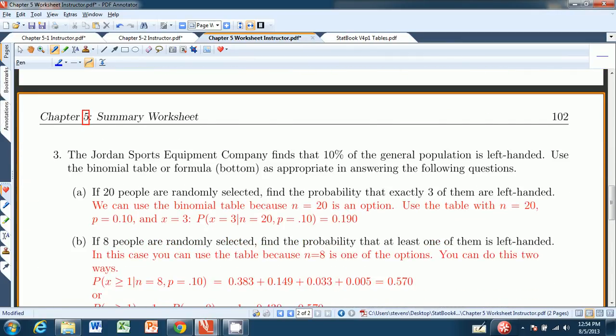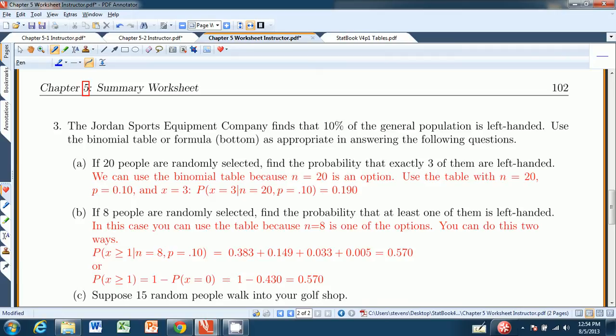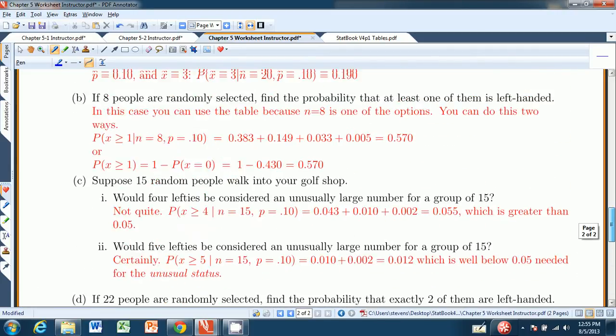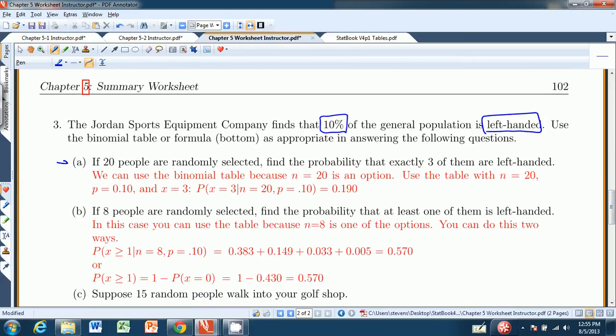Let's turn the page to get to some binomial probability distribution. So in this case, I have the Jordan Sports Equipment Company. They find that 10% of the population, the general population, is left handed. So we're going to use that information. And we're either going to use the binomial table or the formula, which is found at the bottom of this page down here, to answer the following questions. So if 20 people are randomly selected, find the probability that exactly three of them are left handed. So this 20 is N. We have 20 trials, 20 people.